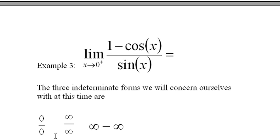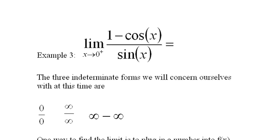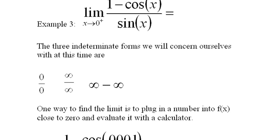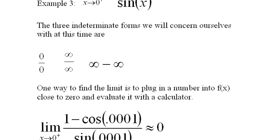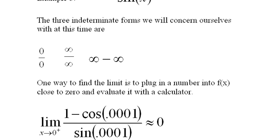The three indeterminate forms we'll concern ourselves with at this time are 0 over 0, infinity over infinity, and infinity minus infinity. One way to find the limit is to plug a number into f(x) very close to 0 and evaluate it in the calculator. So if I put some very small number, greater than 0, into my calculator on both top and bottom here for x's, I get something that's really small. If you do it in your calculator, you get something that's just about 0, very close to 0.